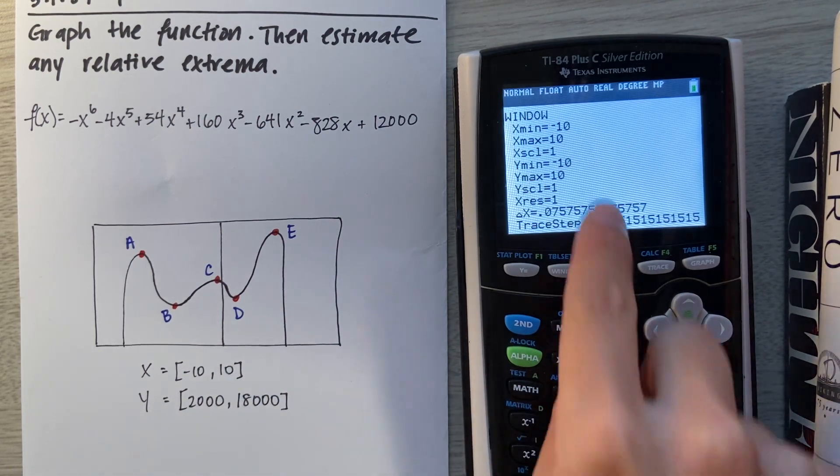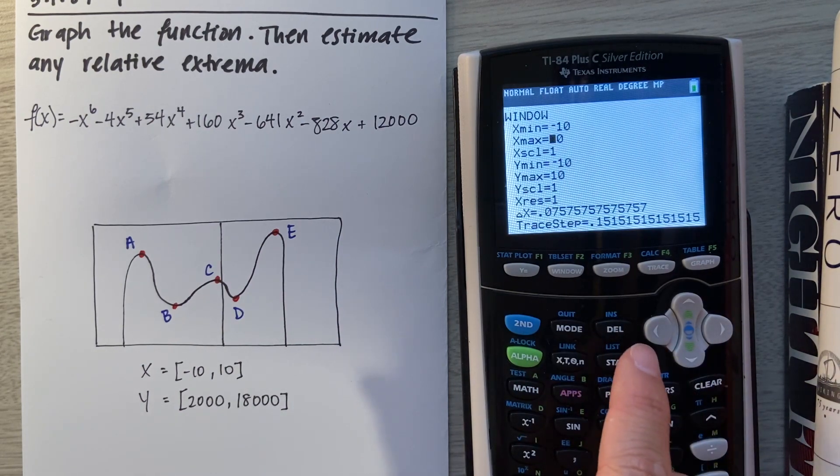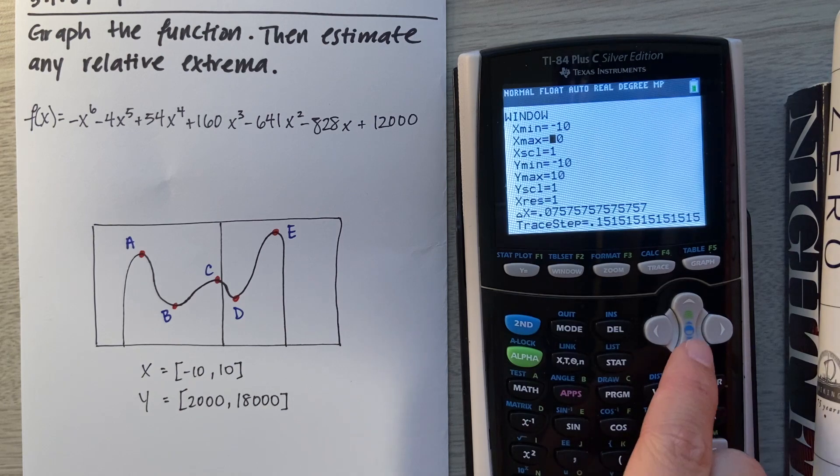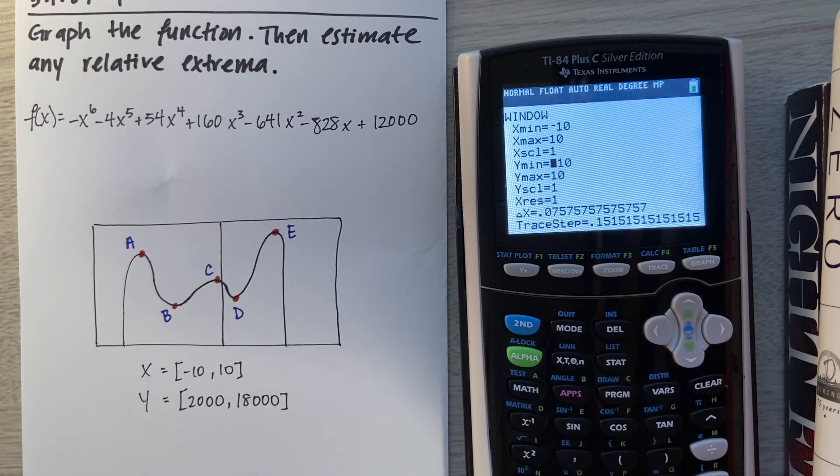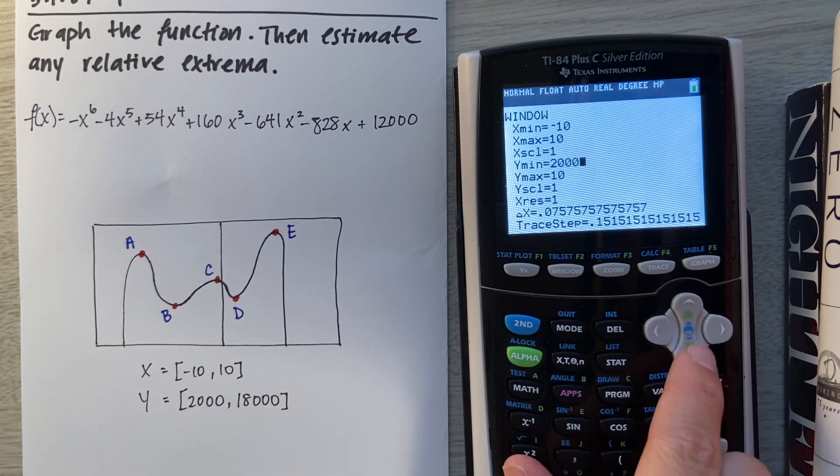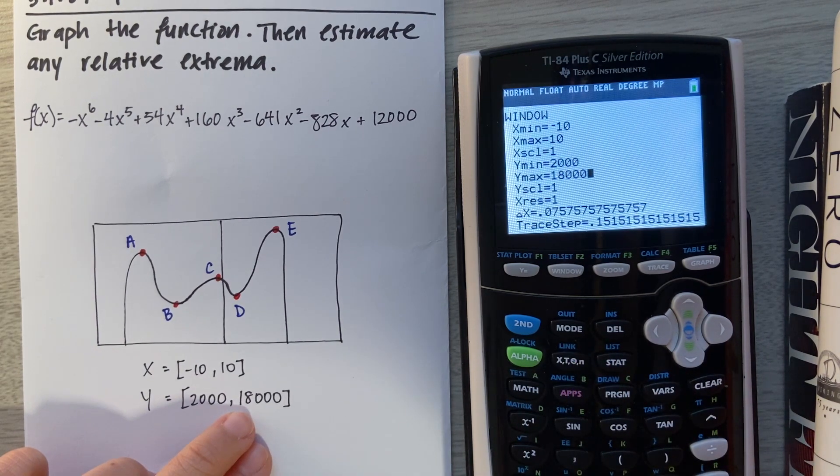For Xmin, we're going to keep it at -10. Perfect, it's already there. And Xmax is 10. That's also already there. We're going to leave the scaling to 1. Then Ymin, we're going to change that to 2,000. And for Ymax, we're going to change that to 18,000. We'll leave everything else the same.